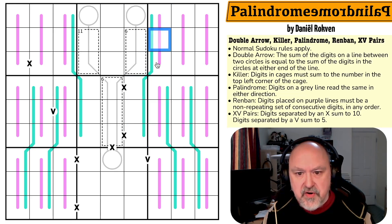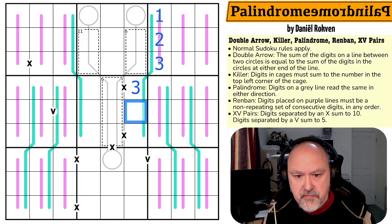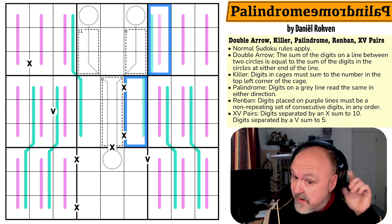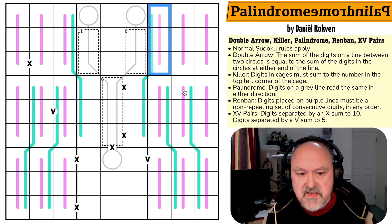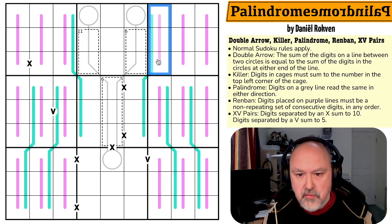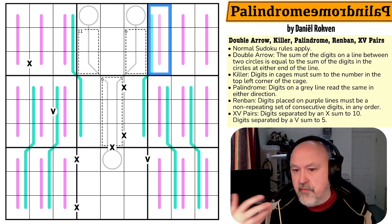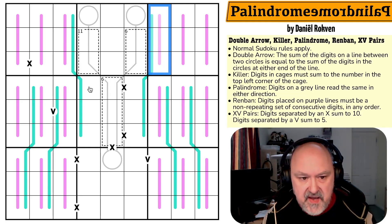The sea green lines are palindrome lines — reading the digits in order one way must give the same sequence reversed. So if a line reads one, two, three, it must also read three, two, one. The purple lines are renban lines, and digits placed on renban lines must be a set of consecutive non-repeating digits in any order. For example, if there's a one on a line, the line must also contain two and three.